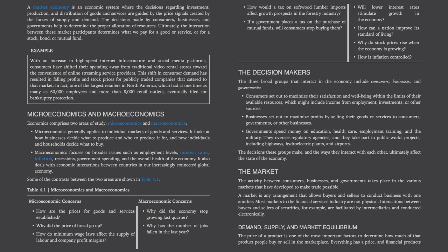The decision makers. The three broad groups that interact in the economy include consumers, businesses, and governments. Consumers set out to maximize their satisfaction and well-being within the limits of their available resources, which might include income from employment, investments, or other sources. Businesses set out to maximize profits by selling their goods or services to consumers, governments, or other businesses.